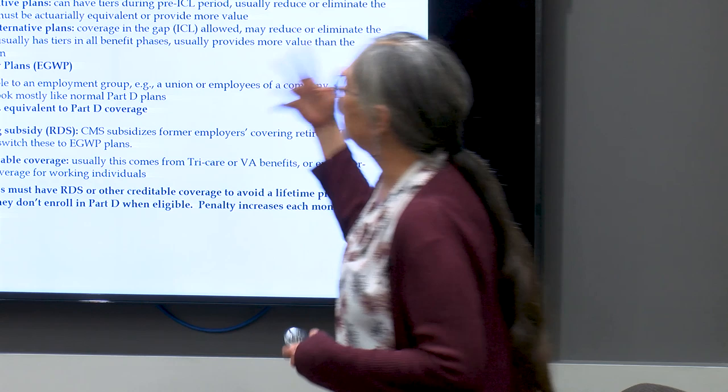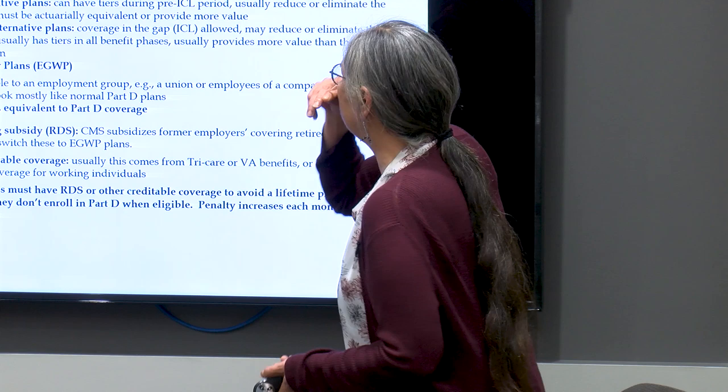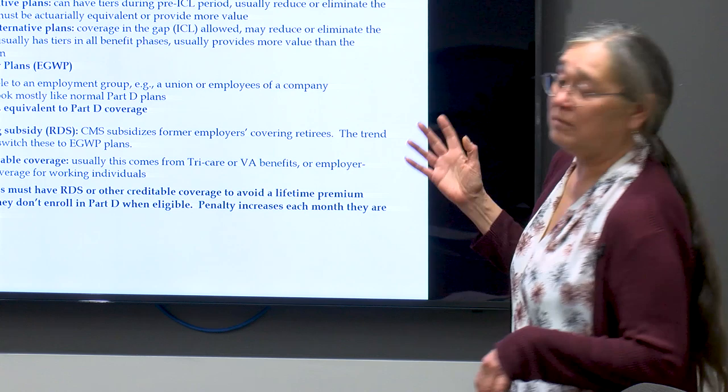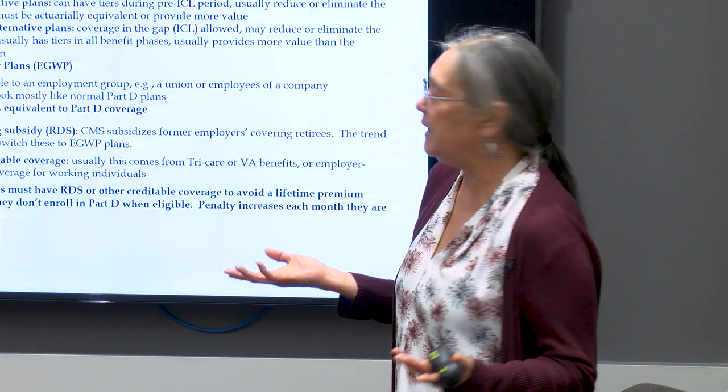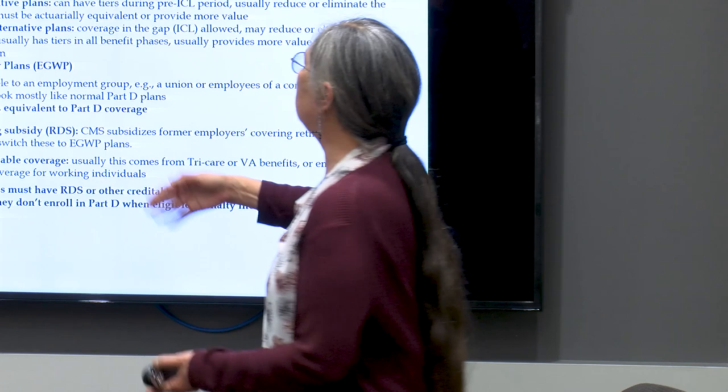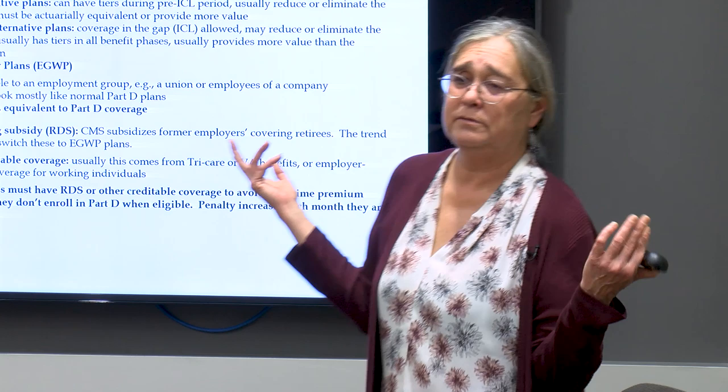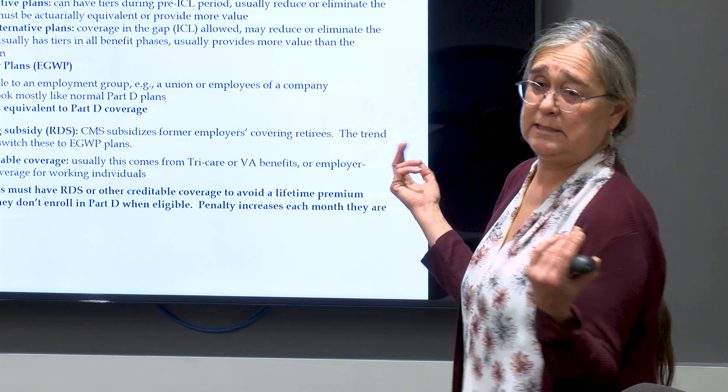Then there are enhanced alternative plans, which allow coverage of drugs in the gap. They can reduce or eliminate the deductible, have tiers in all the benefit phases, and usually provide more value than the standard plan. The premiums are usually quite a bit more than standard plans, ranging from about $20-25 a month up to $100 or more per month.